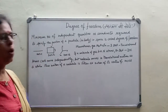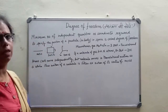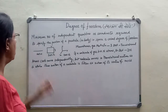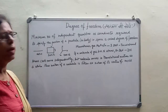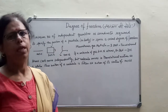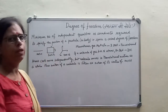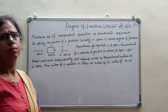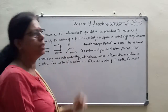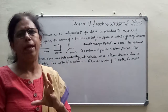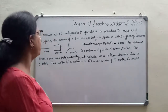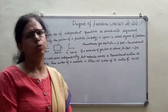जैसे हमारे पास कोई particle है और वो एक single line में travel कर रहा है, तो उसकी degree of freedom एक हो जाएगी। पर अगर हमारा particle plane में है, तो हमको दो coordinates चाहिए उसकी स्थिति बताने के लिए। और अगर वो space में, किसी volume में है, तो वहाँ पर 3 coordinates बताने पड़ेंगे - तो degree of freedom 3 हो जाएगी।